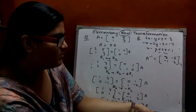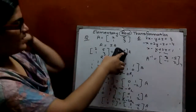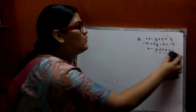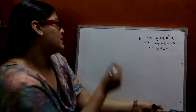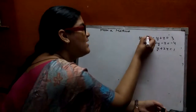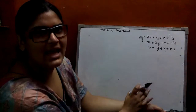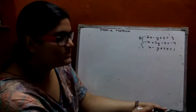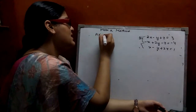This is a long method, but you can also apply this to find out the inverse. Now we are moving towards the solution of any three equations. You have to find out the value of X, Y, Z from these equations by matrix method. For matrix method, the formula is AX is equal to B. Here there are three matrices: A, X, and B.